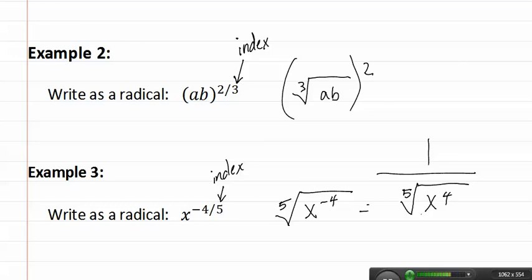A way to remember how to quickly do this is at the beginning, if you see a negative, you simply write it one over x to the four fifths. And then you proceed to convert it, which gives you one over the fifth root of x to the fourth.